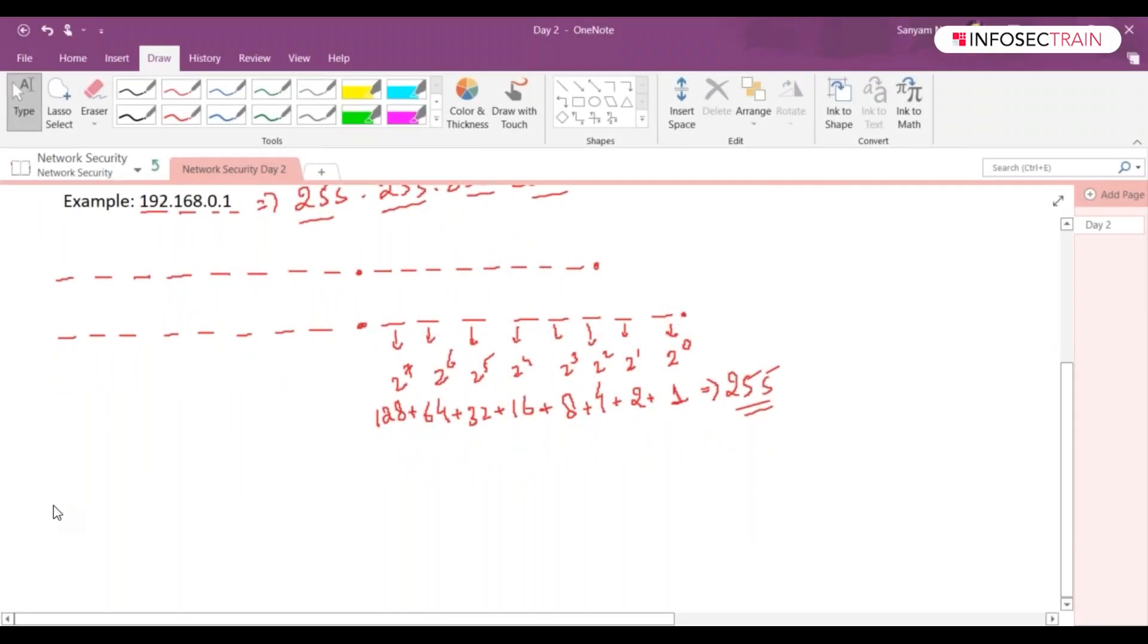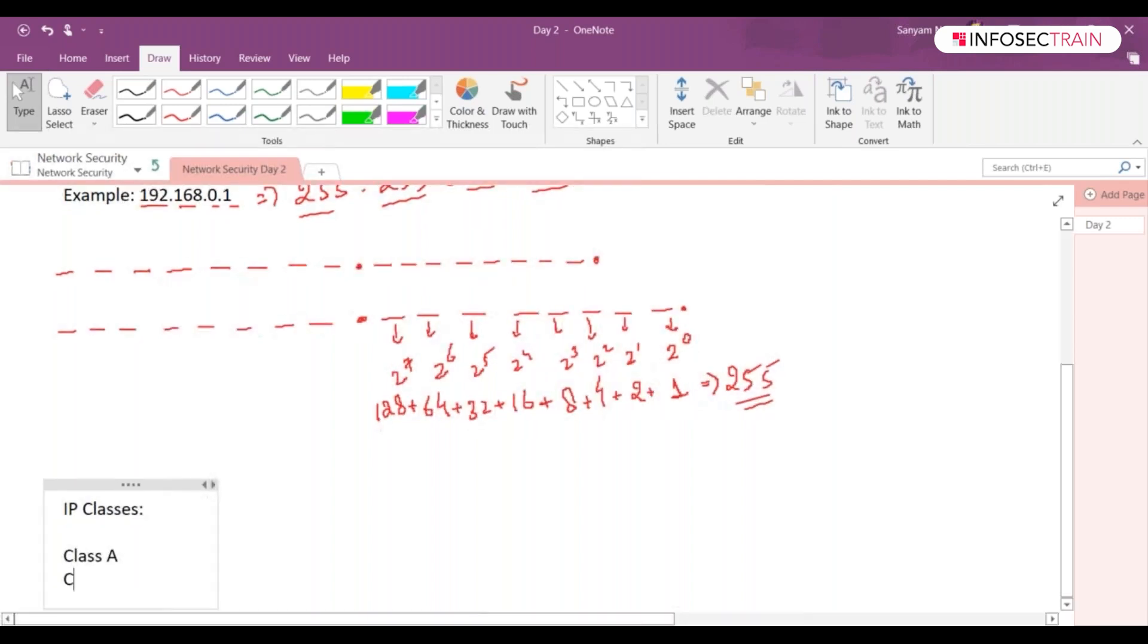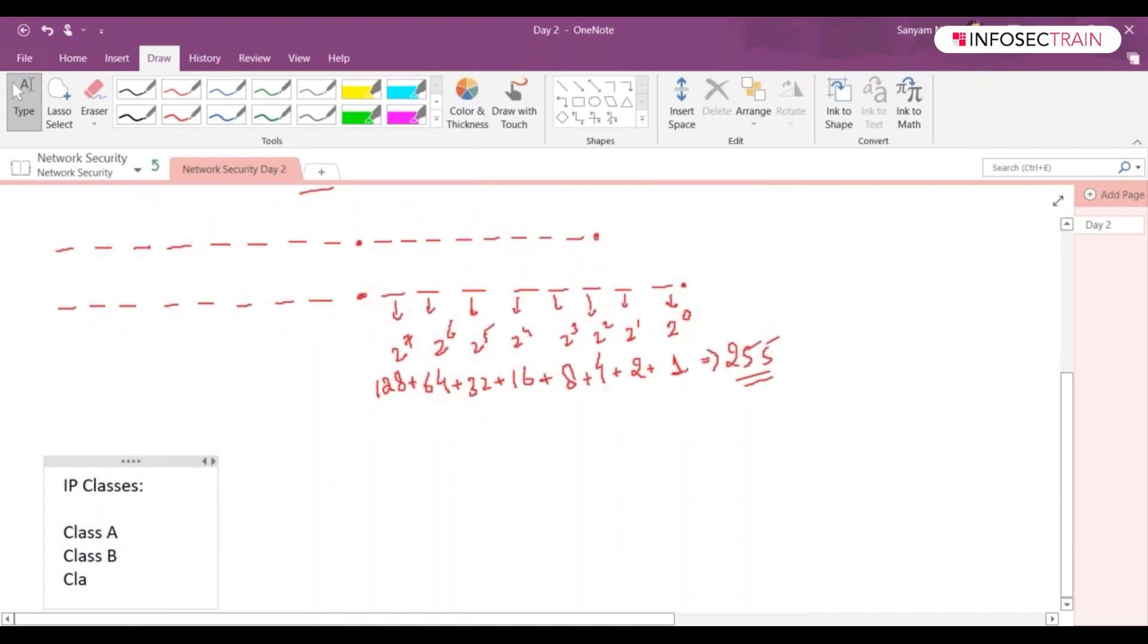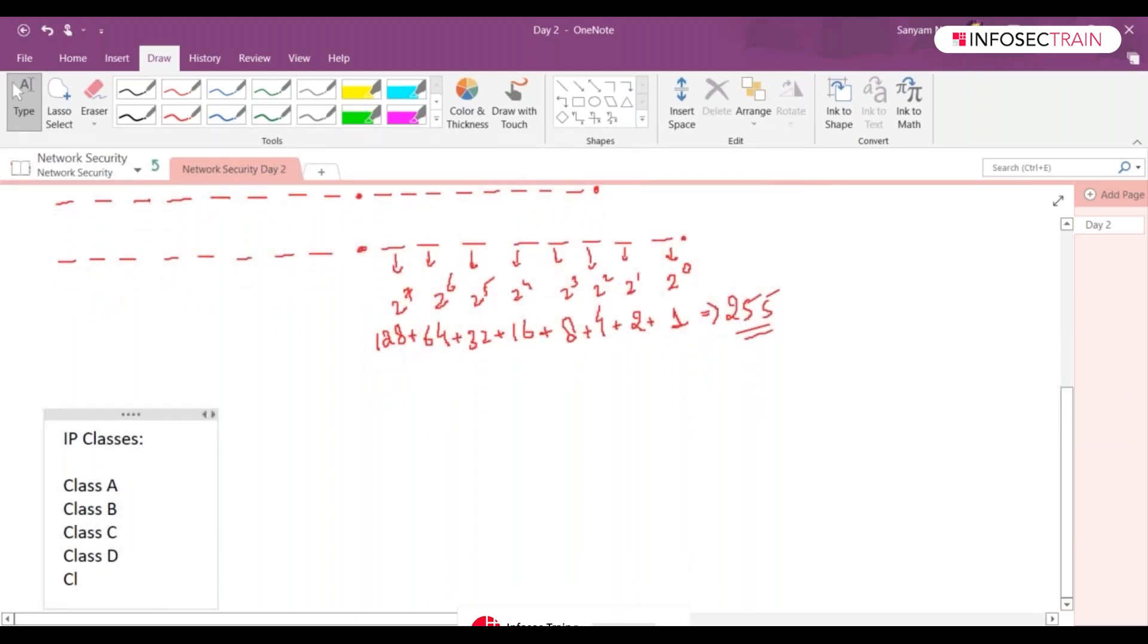Now if I talk about the classes, the classes were Class A, B, C, D for this point. So the one which we use normally, Class D is a class, E is also... Think about A, the range is...